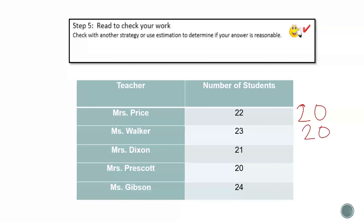Each class had two 10s, which is 20. So that means that we have five groups of 20 and then some more because of the ones. When I add five groups of 20, that's 100 because we count 20, 40, 60, 80, 100.